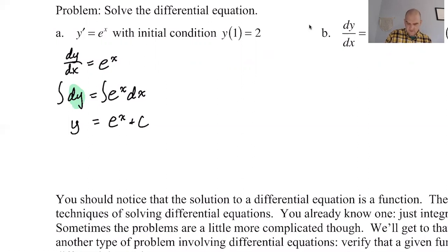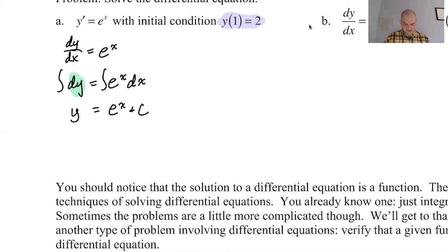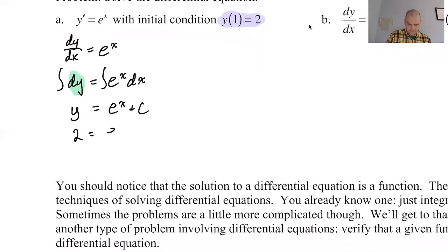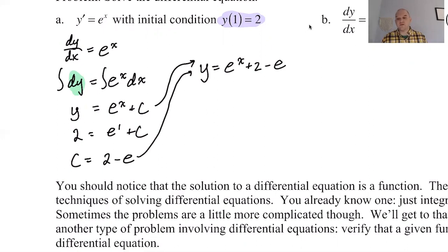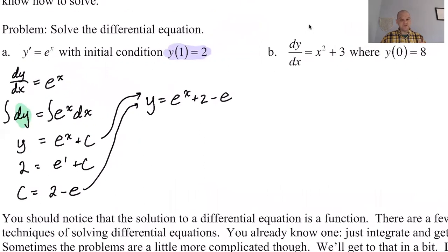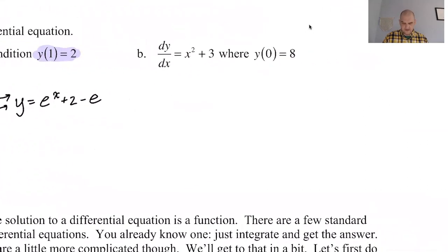Now I'm going to use the initial condition. The initial condition is the thing that allows you to solve for C. Here we have 2 equals e to the first plus C, so C equals 2 minus e. That means y equals e to the x plus 2 minus e. We solved the differential equation using what's called separation of variables.